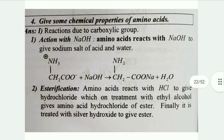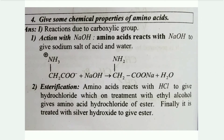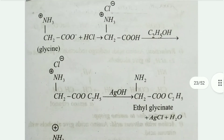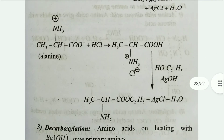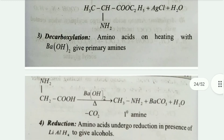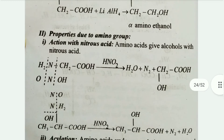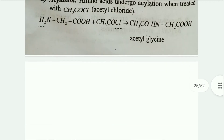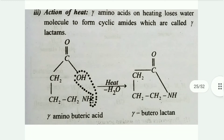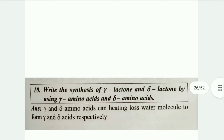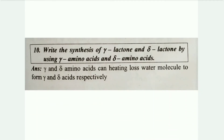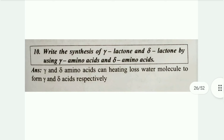Give some chemical properties of amino acids. Also, write about the formation of a peptide bond using alpha amino acids. If you have any doubts about the symbols or names, comment below for clarity.